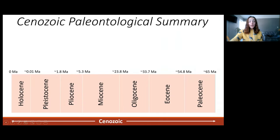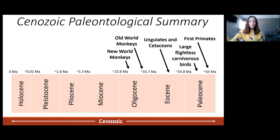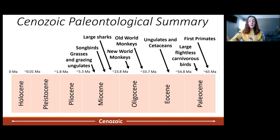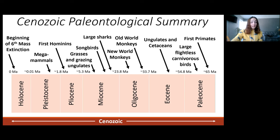To give the paleontological summary of biological evolution during the Cenozoic: the first primates evolved in the Paleocene; large flightless carnivorous birds evolved in the Paleocene; ungulates and cetaceans evolved in the Eocene; Old World monkeys evolved in the beginning of the Oligocene; New World monkeys evolved in the Oligocene as well; large sharks such as Megalodon appeared during the middle Cenozoic; songbirds evolved; grasses and grazing ungulates expanded co-variantly; the first hominins appeared in the Pliocene; and mega mammals evolved in the Pleistocene due to cooler temperatures. And as we seem to be ending every era video — Paleozoic, Mesozoic, and Cenozoic — with a mass extinction, it is largely confirmed that we are living in the beginning of the sixth mass extinction.